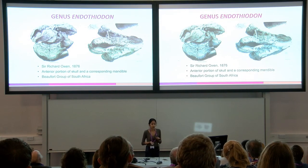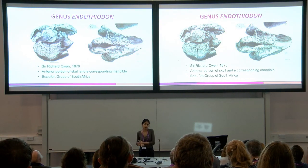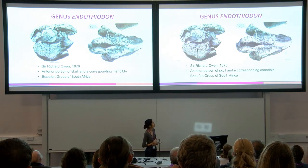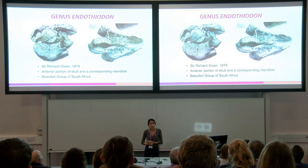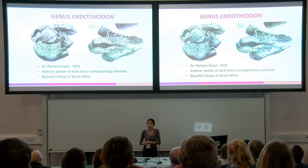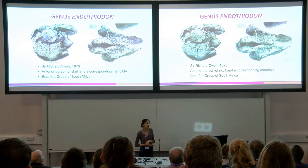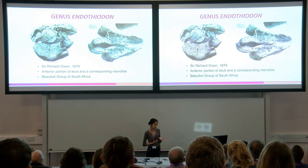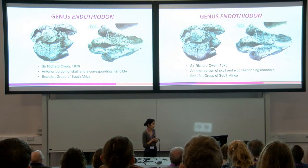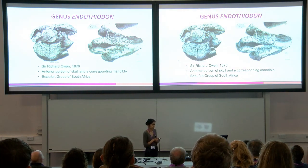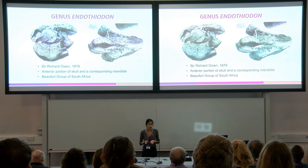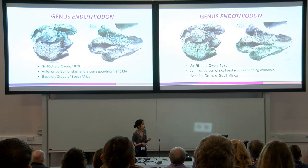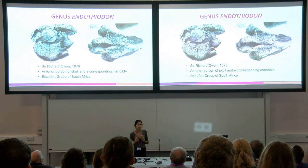One of the first dicynodont genera to be described from the Karoo Basin of South Africa is Endothiodon. This was described in 1876 by Sir Richard Owen following the discovery of an anterior part of the skull and a corresponding mandible from the Beaufort Group of South Africa. Endothiodon in Greek means 'tooth within,' and this describes one of its key diagnostic features.